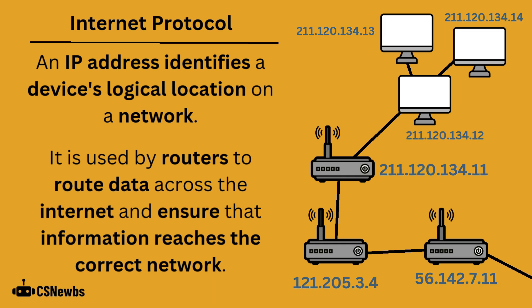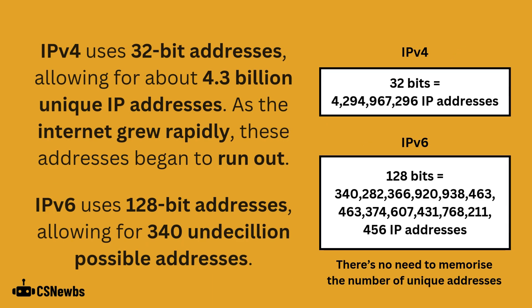IP stands for Internet Protocol. There are two versions of IP that you need to know. IP version 4 uses 32-bit addresses, allowing for just under 4.3 billion unique IP addresses. However, as the internet grew rapidly, these addresses began to run out, so they invented IP version 6, which uses 128-bit addresses, allowing for 340 undecillion possible addresses.